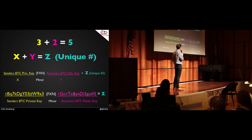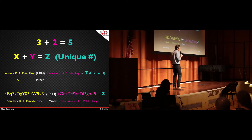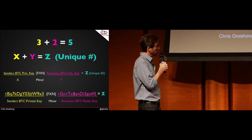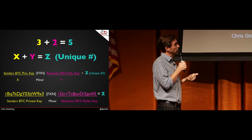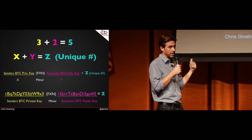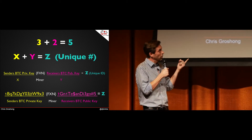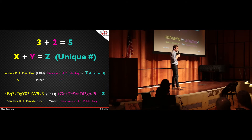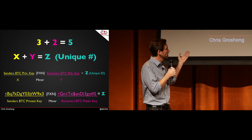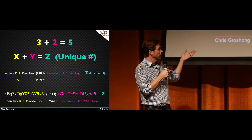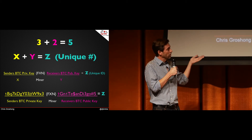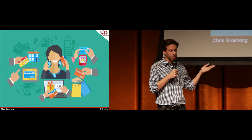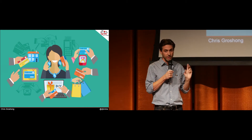The sender makes X the sender's Bitcoin private key, and the simple math function is replaced by the miners' function. The receiver's Bitcoin public key is represented by Y. So you're always going to get a unique ID, Z, when you combine those things together. Below is an example of a private key, the function, and the Bitcoin public key — when combined, they always produce a unique ID.